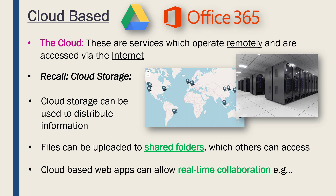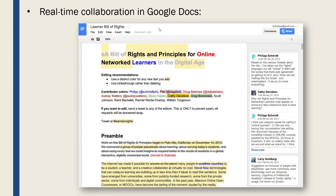The cloud doesn't just cover storage — it also includes web applications. Web apps are software that runs on a server somewhere rather than on your computer, so the processing is done in a remote location. Many of these applications now allow real-time collaboration, which Office and Drive certainly do. Here we've got a screenshot of Google Docs — Google's word processor done entirely online over the cloud — with multiple authors working on the same document at the same time, one deleting text while another adds text.